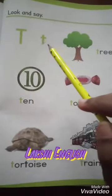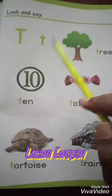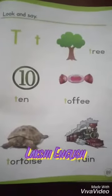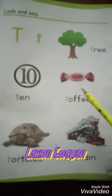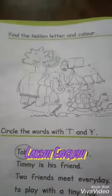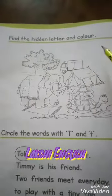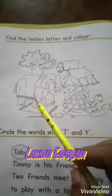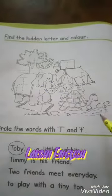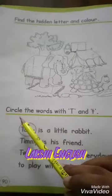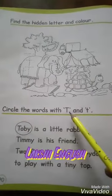Capital T and simple T sound. Look and say: tree, ten, toffee, tortoise, train. Find the hidden letter and color. You have to trace capital T and simple T, then color the picture.